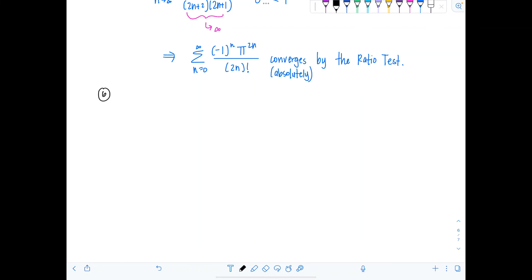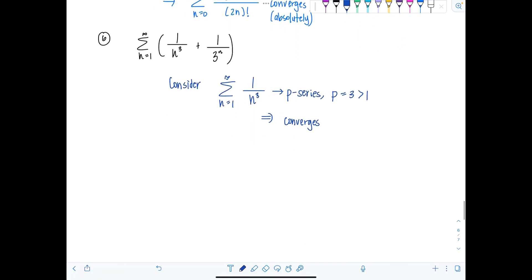One more cute one. This is number 6. I have the sum n equals 1 to infinity, 1 over n cubed plus 1 over 3 to the n. You are not allowed to distribute a sum across the terms and break it up until you've determined that each of these individually is convergent. That's a big no-no. So you're just going to separately consider them. So consider the sum n equals 1 to infinity. Let's just deal with that first term, 1 over n cubed. It should be familiar. This is a p series. p equals 3, which is greater than 1. Therefore, it converges. That's all you have to say. No one needs you to prove it again.